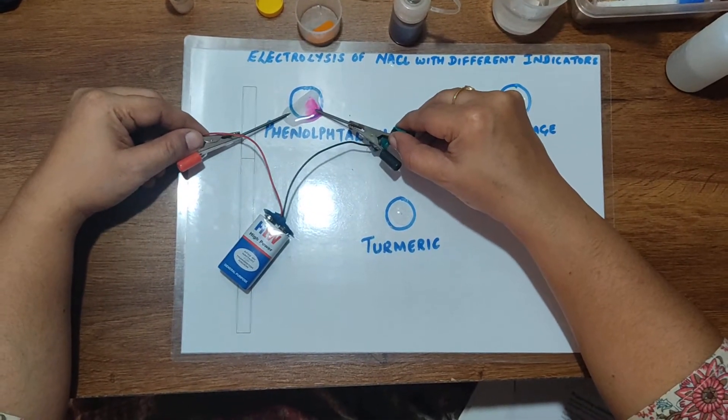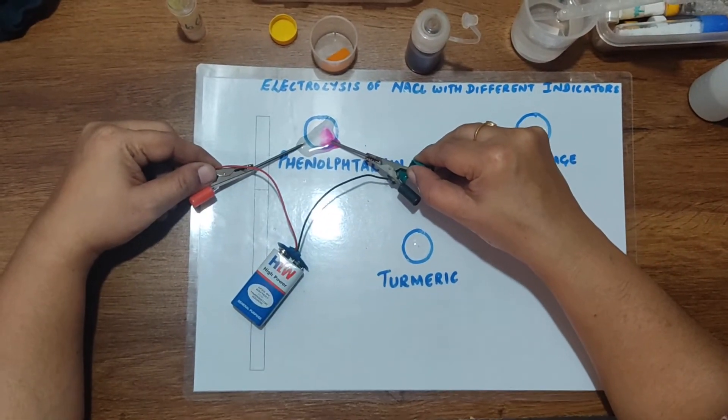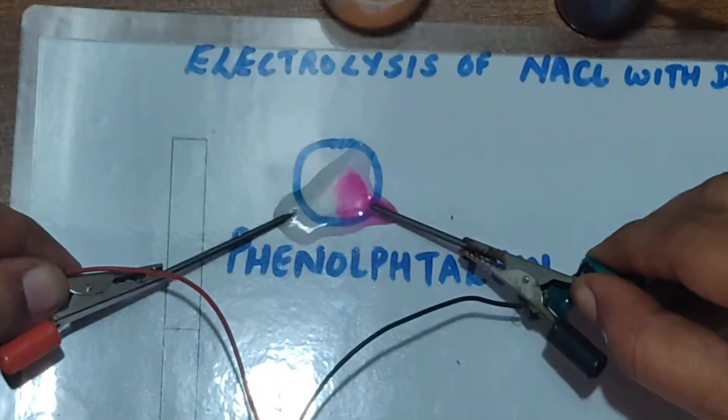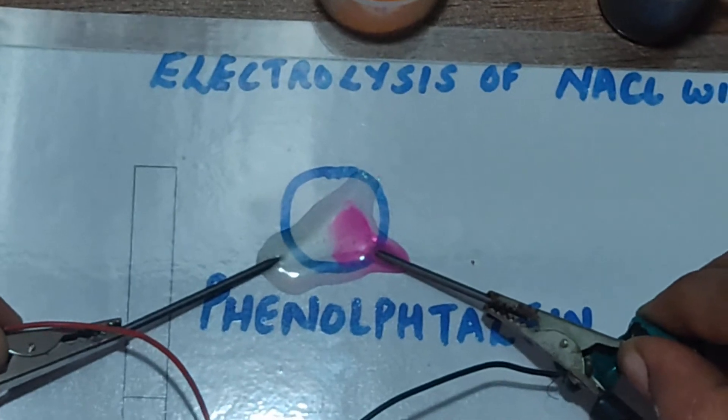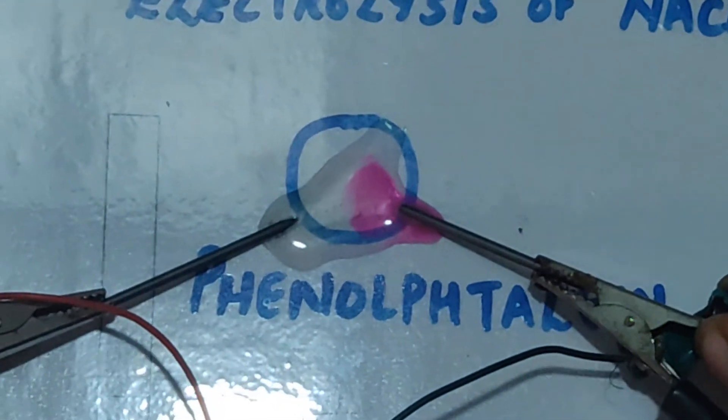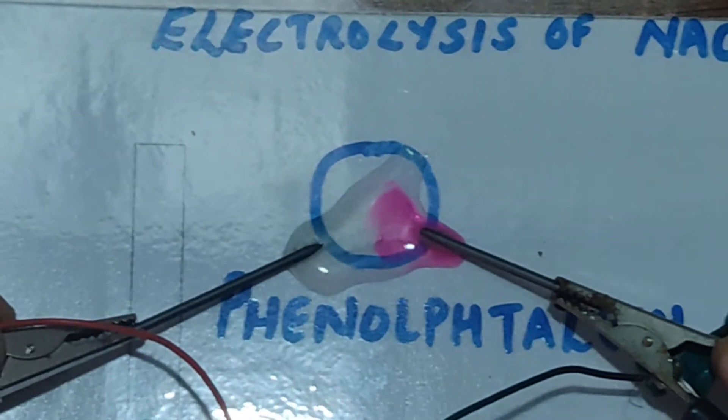At the positive electrode or anode, oxidation takes place. Chloride ions are oxidized to chlorine gas. You can see the small bubbles even at the positive electrode. The reaction remains the same irrespective of the indicators used.